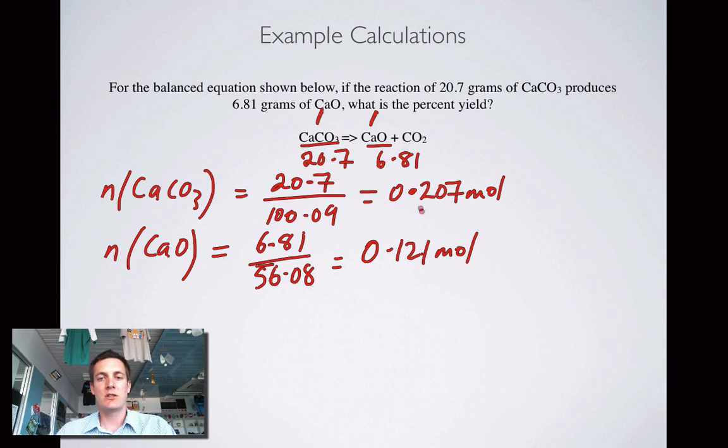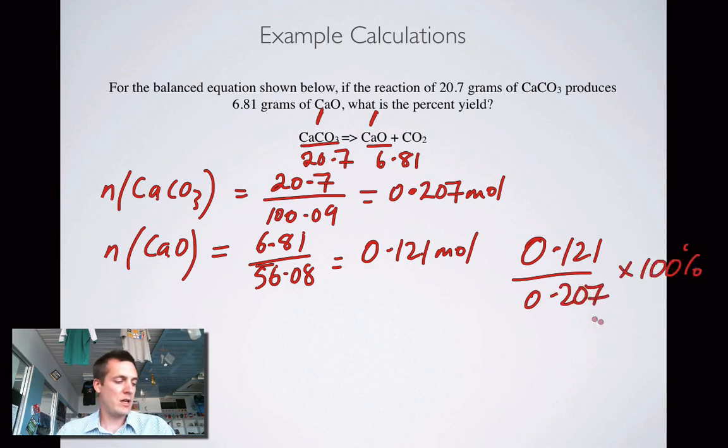So this mole ratio is telling us that if we started with 0.207 moles of calcium carbonate we should have got 0.207 moles of calcium oxide, but we didn't, we only got 0.121 moles. So what is 0.121 as a percentage of 0.207? Well that's how we find that out. So let's do that and that gives us 58.7% apparently.